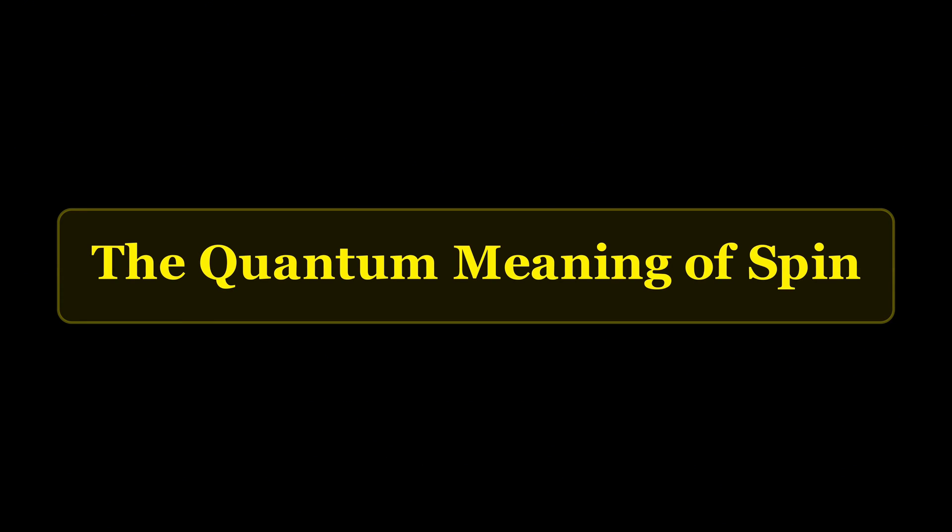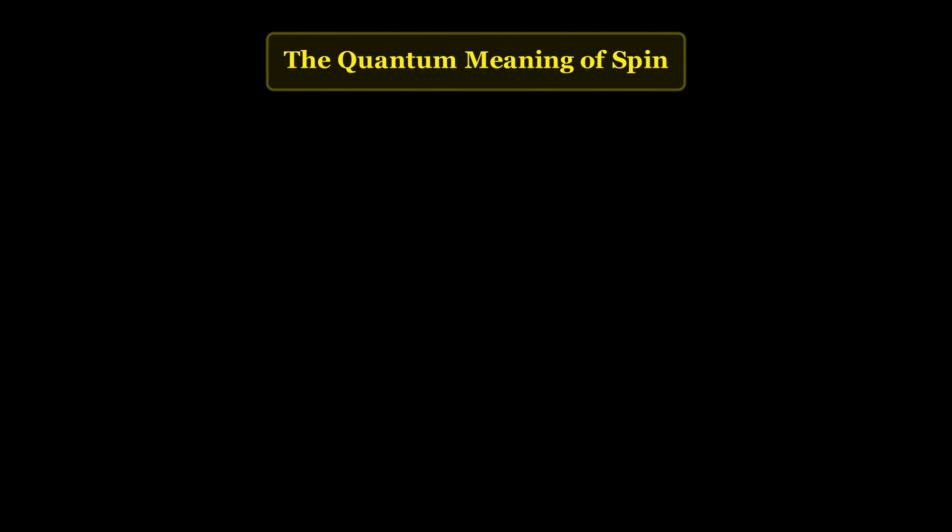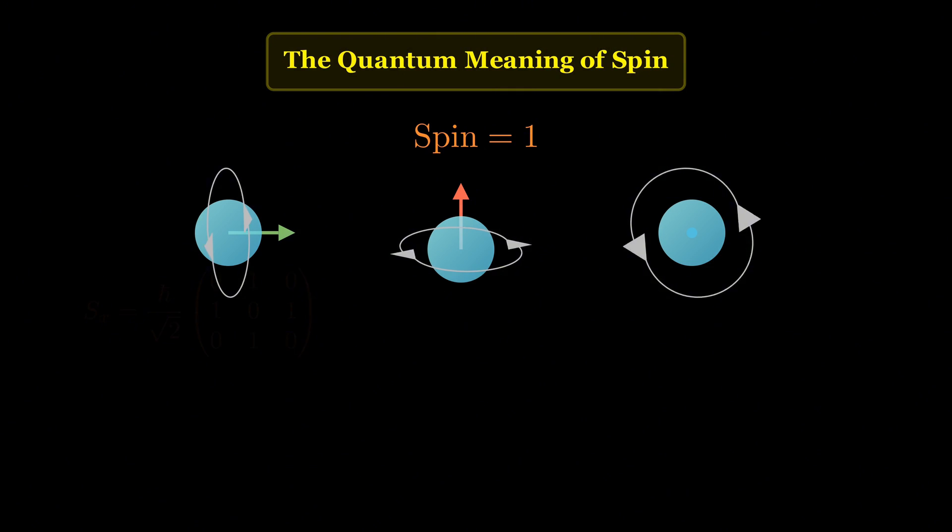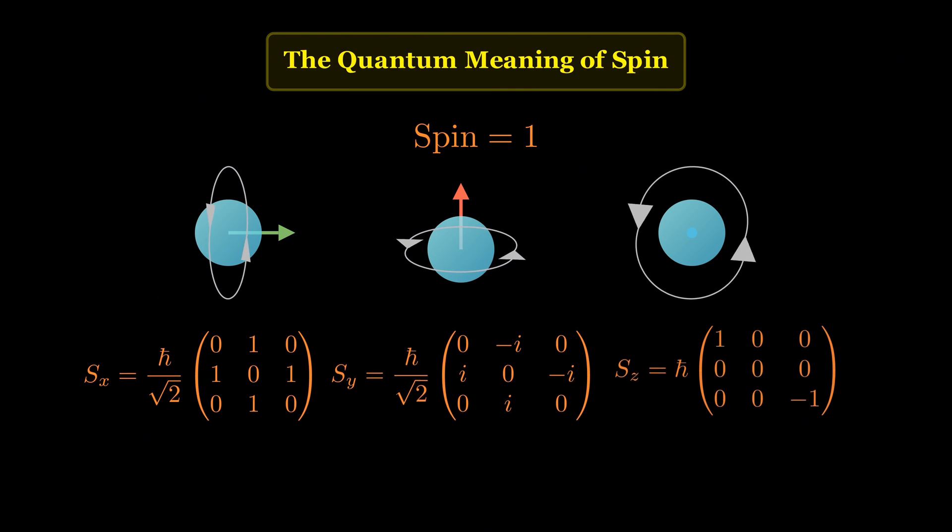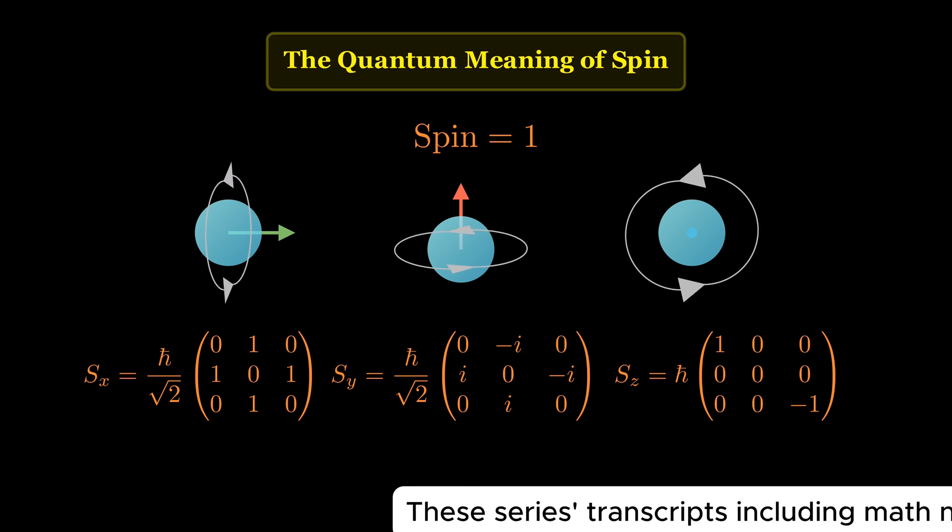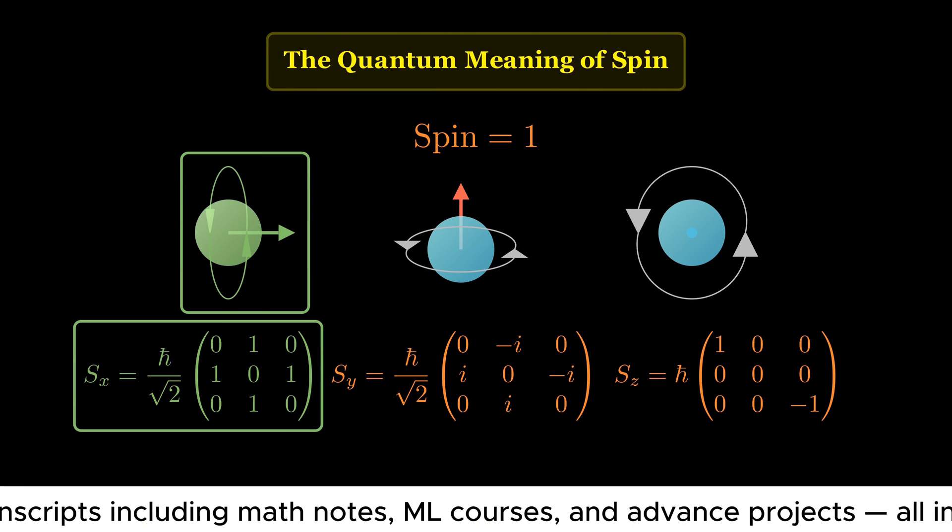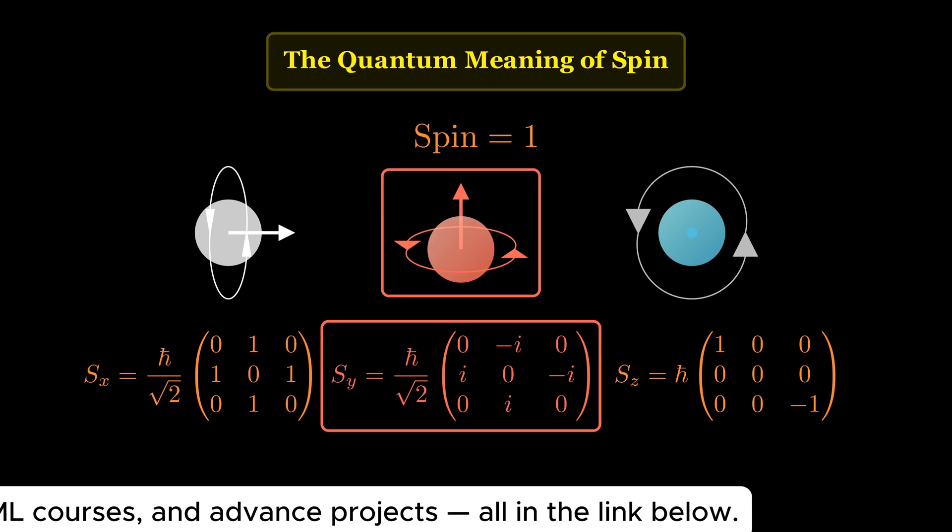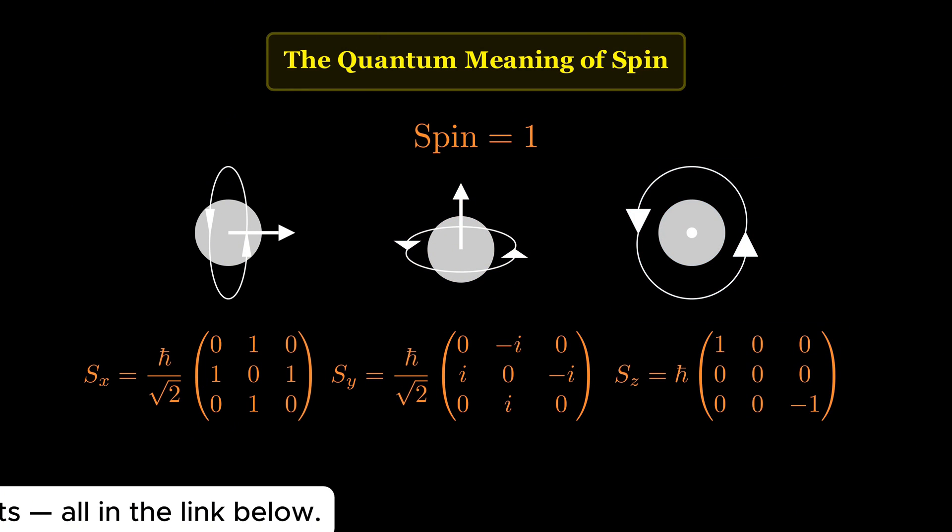Let's start from the beginning. What do we actually mean when we say a particle has a spin equal to one? Even though the word spin sounds like the particle is physically rotating, it's not. Instead, spin is an intrinsic form of angular momentum, something built into the particle itself, just like its mass or charge. So when we say spin equal to one, we're talking about how much intrinsic angular momentum that particle carries according to the laws of quantum mechanics.